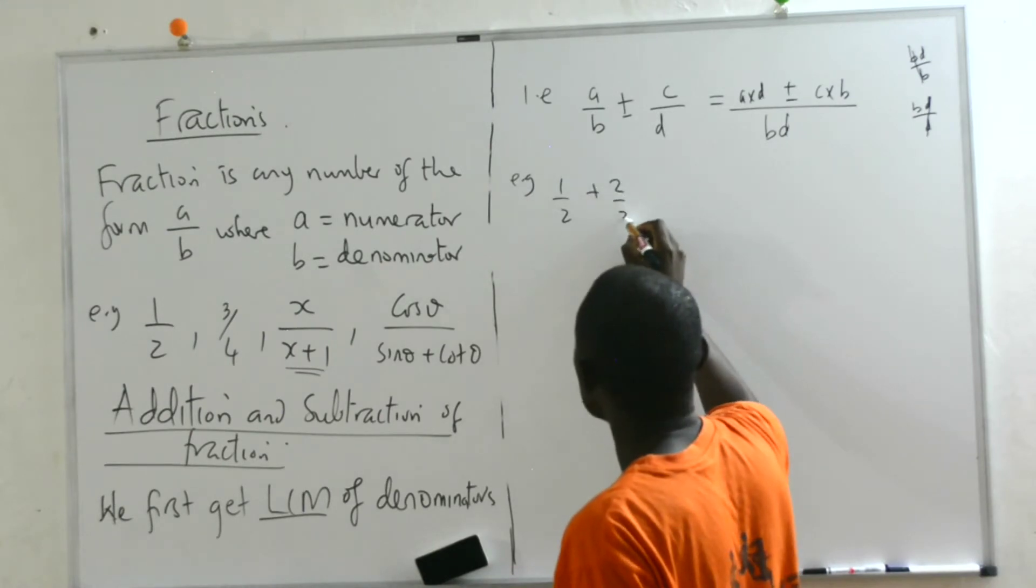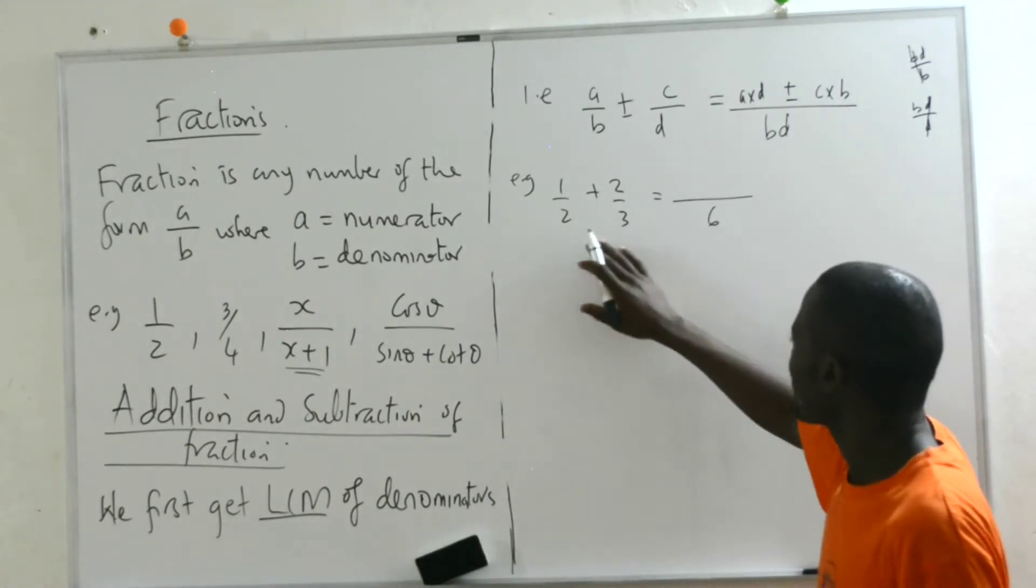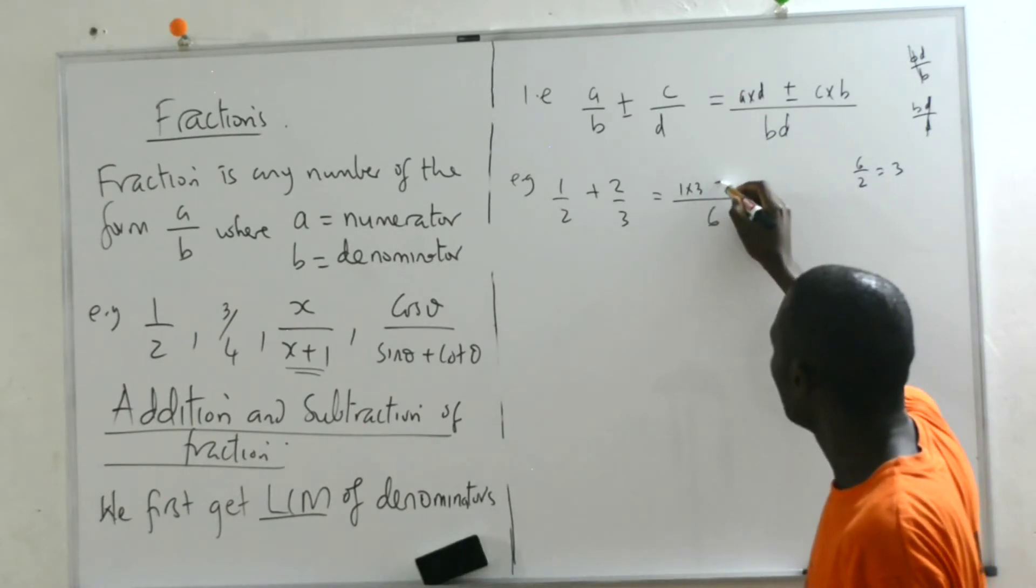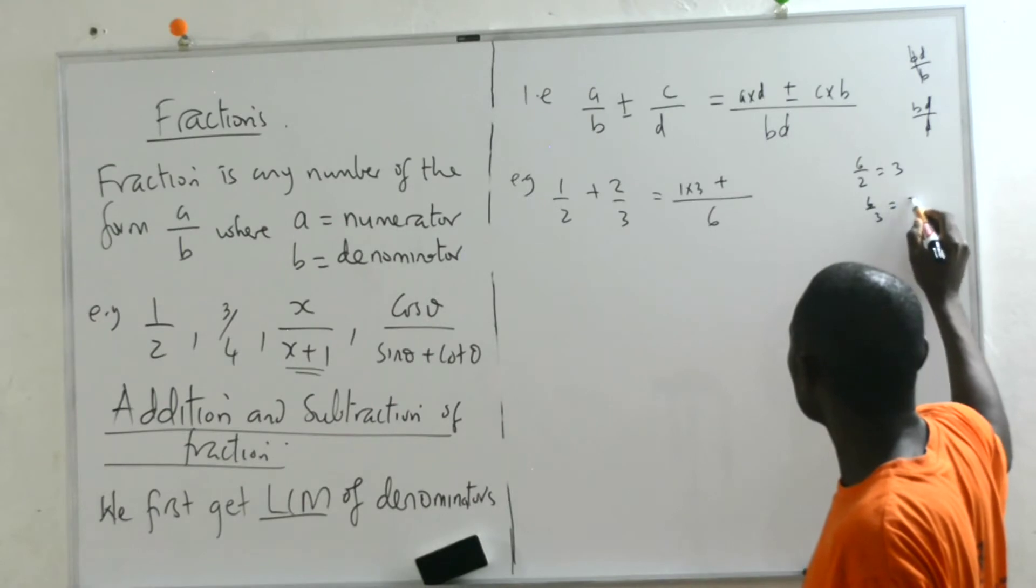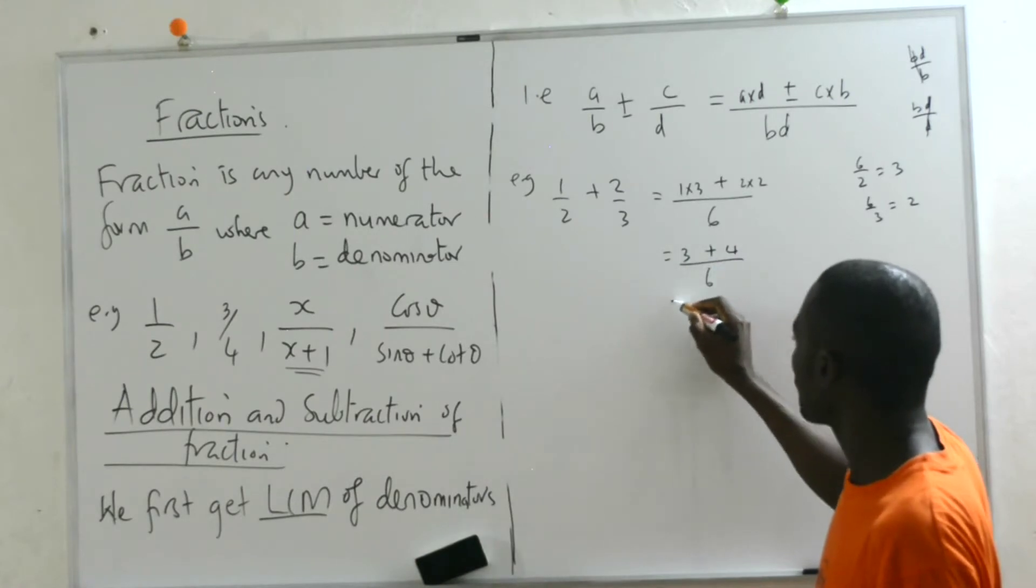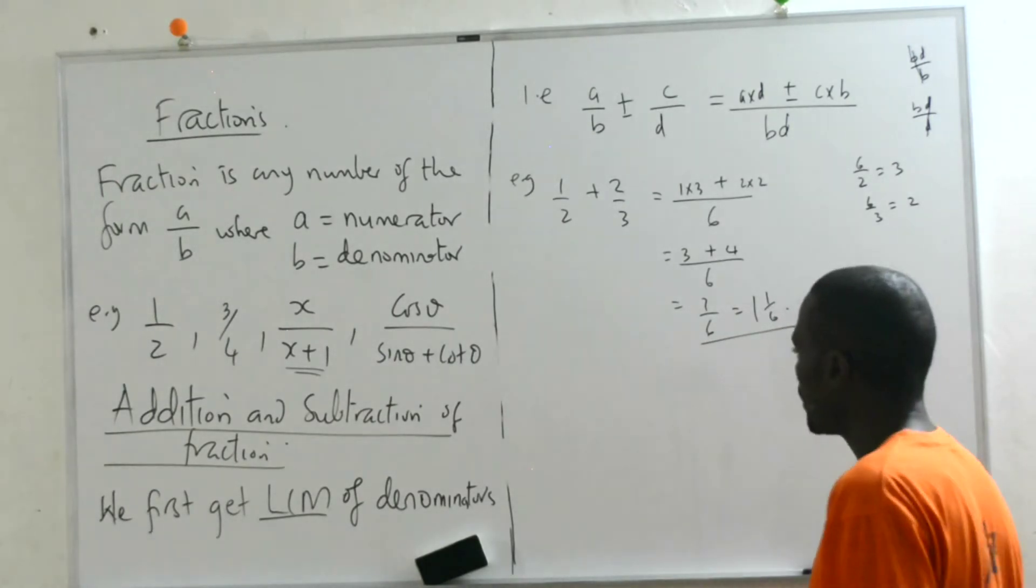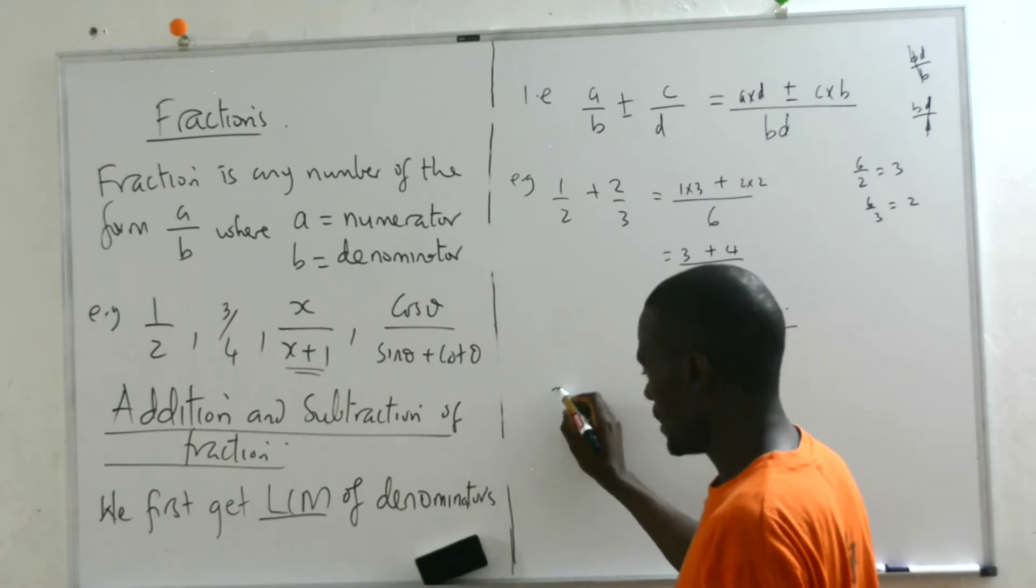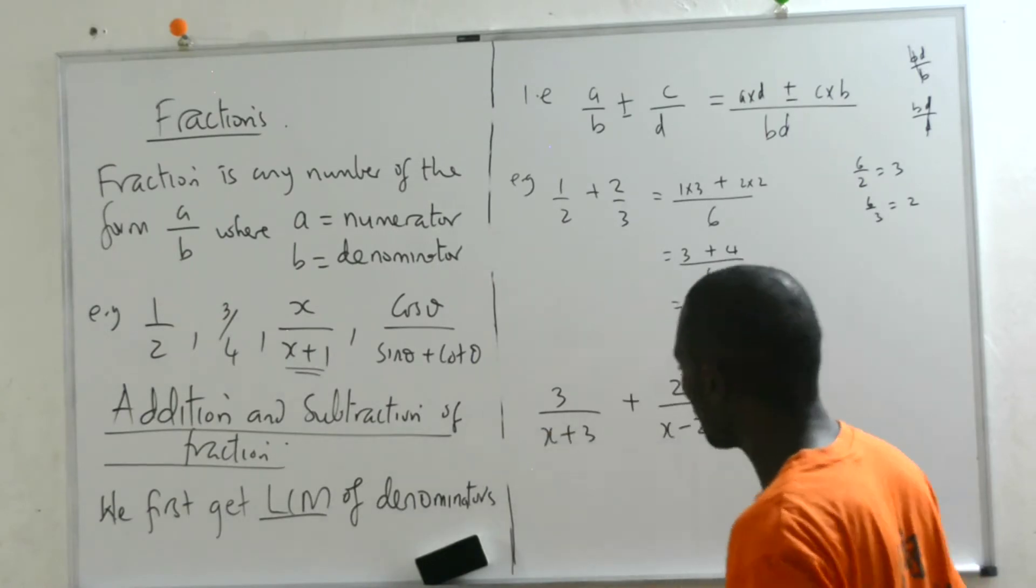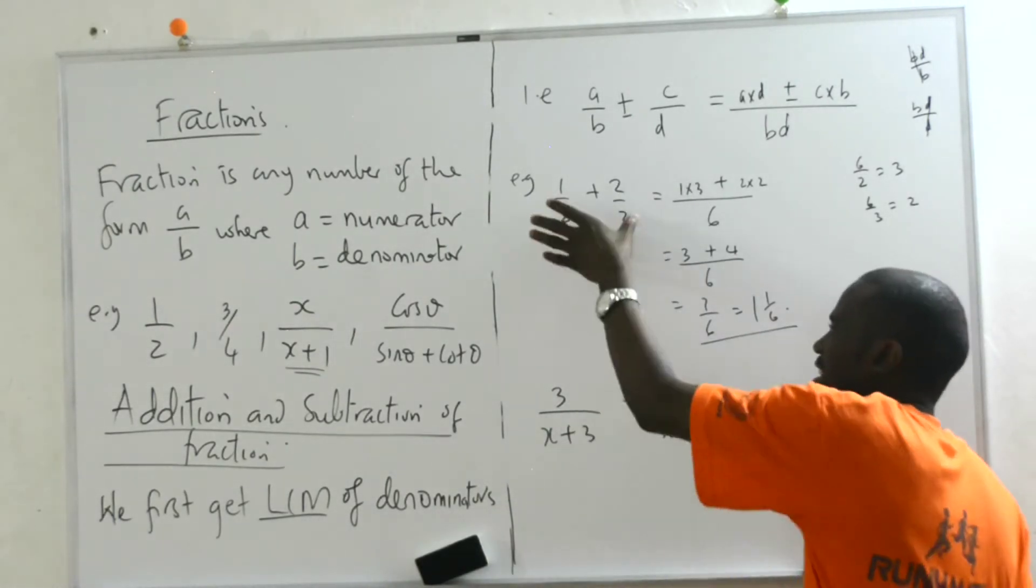So LCM is BD. Now to get this, we divide: BD divided by B, we remain with D, so we multiply that by D. Plus or minus, this divided by this - D divided by D, then D goes, so we remain with B. Let's look at a simple example. We have 1/2 plus 2/6.